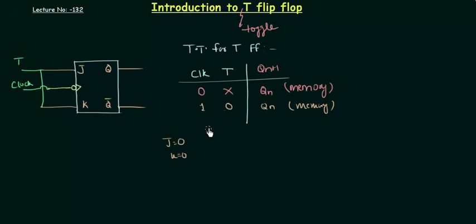Now, what when the clock is high and the value of T is 1? This is what we are looking for, because when T is 1, J is 1 and K is 1, and this is the case when we have the toggle action. So the output will be Qn complement. This is my toggling.